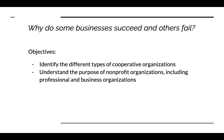However, that is not true of all types of organizational structures, and that is what we will be focusing on today — non-profits and other business structures. Before we dive in, I want to quickly go over the objectives along with the essential question for the unit. The essential question is: why do some businesses succeed and others fail? The first objective is to identify the different types of cooperative organizations. The second is to understand the purpose of non-profit organizations, including professional and business organizations.